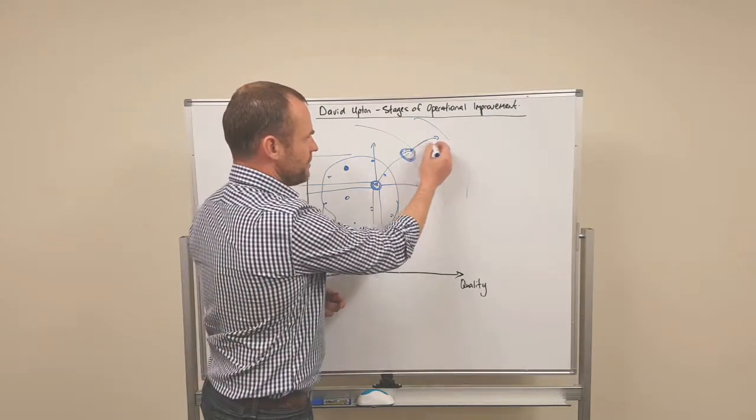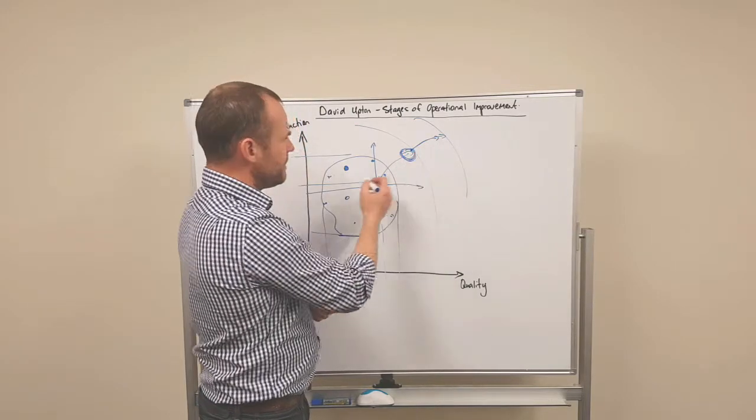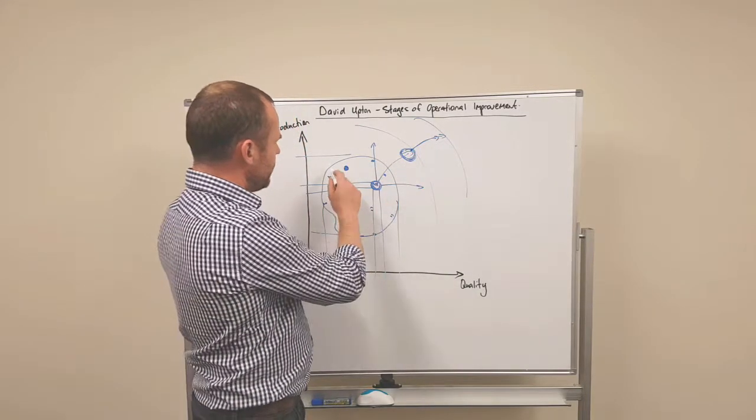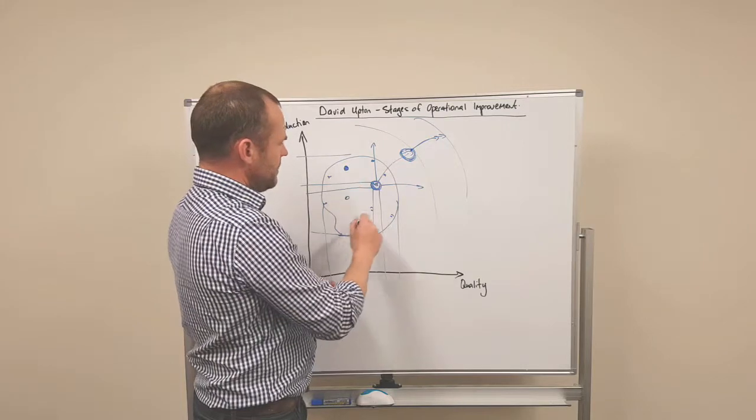And that's the work that takes you from here to there. That's breaking the constraint. But they do that often before they've actually got control.